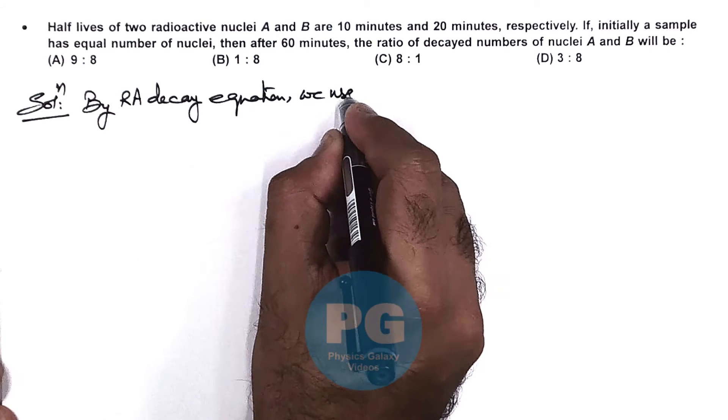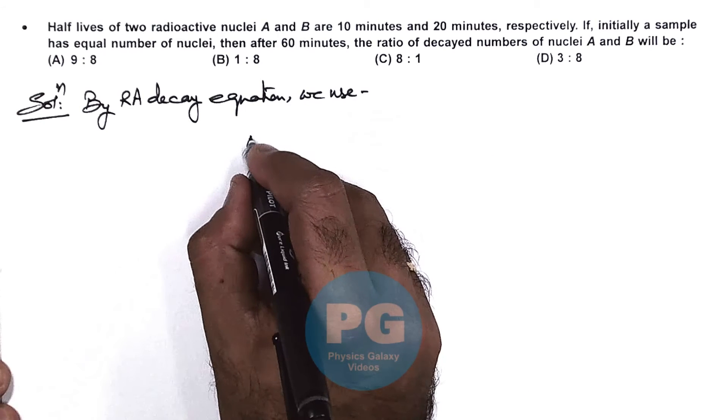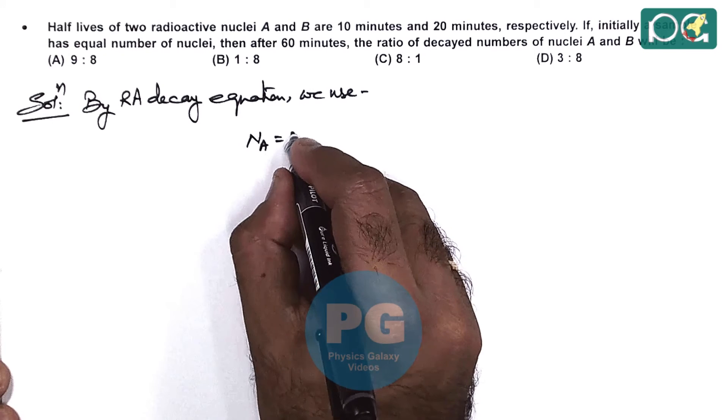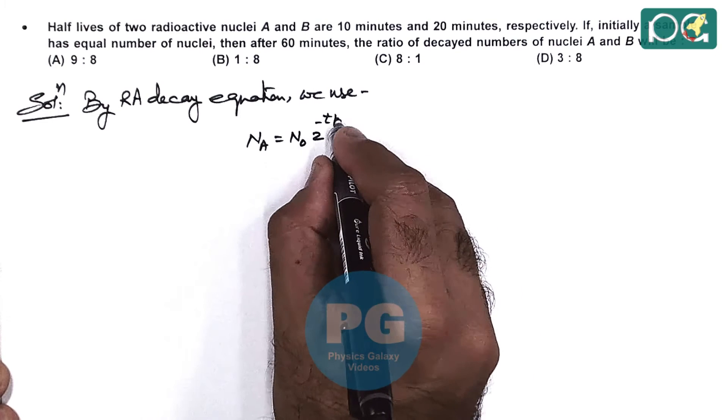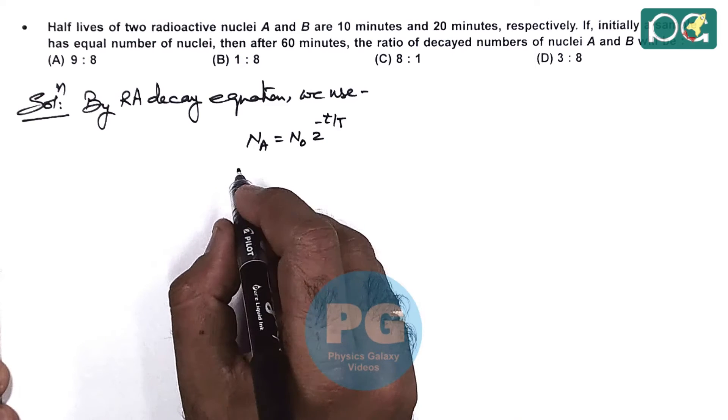For NA, we can write it as N0 times 2 to the power minus T by Ta. And we need the number of decayed nuclei.